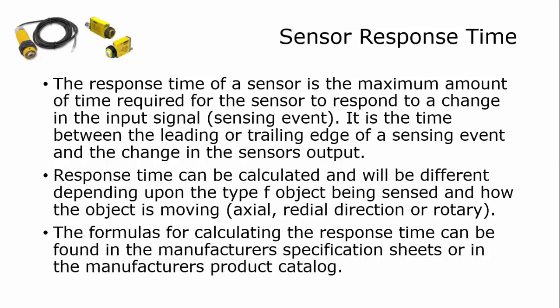In simpler terms, if I've got something moving past a sensor at a rapid rate, can the sensor turn on and off fast enough to see that fast moving object?